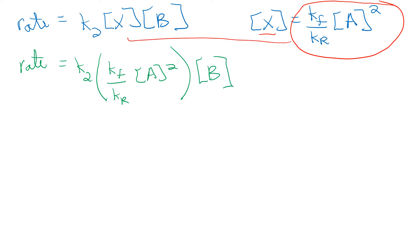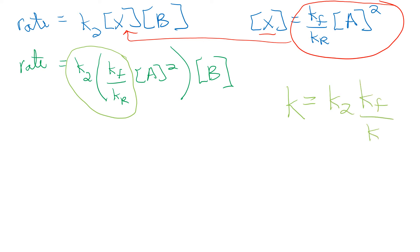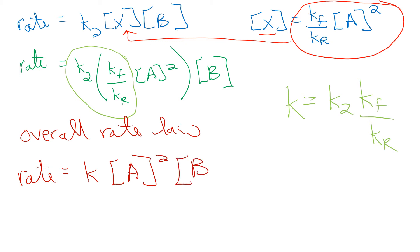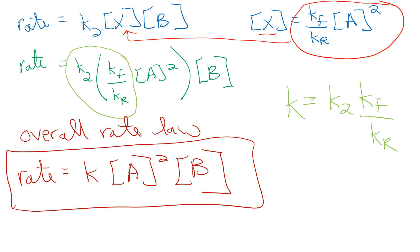One trick is to take that complicated rate constant and simplify it: let k equal k2 times kf divided by kr. So our final overall rate law is: rate equals k times concentration of A squared times concentration of B. That is the correct rate law.